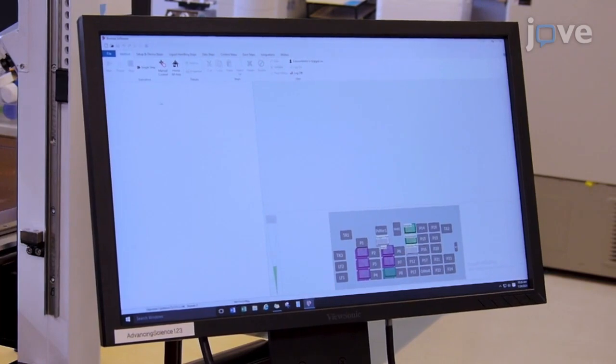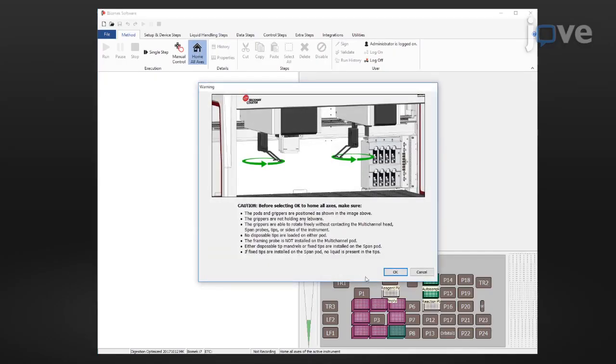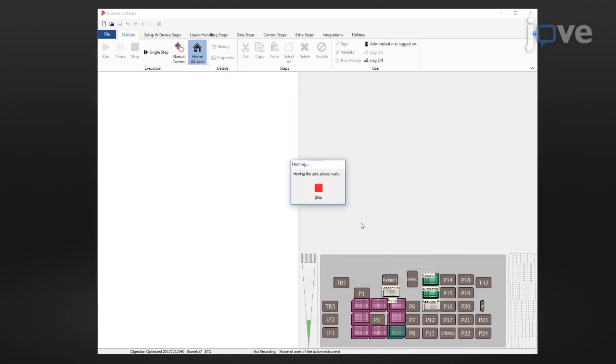open the liquid handler device software and under the Method tab, select Home All Axes to orient the automated liquid handler.